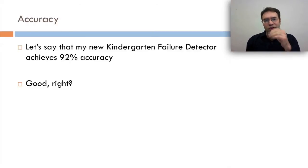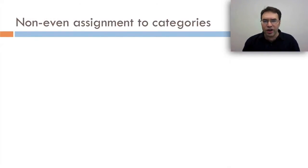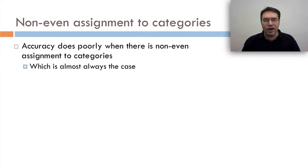Why is that? Well, let's say that my new kindergarten failure detector, the model that tells you is this kid going to fail kindergarten, achieves 92% accuracy. If we just look at that number, we declare victory because it looks really good, right? But in fact, if there's non-even assignment to categories, accuracy is going to do poorly. And there's almost always non-even assignment to categories, so accuracy usually isn't a very good metric.